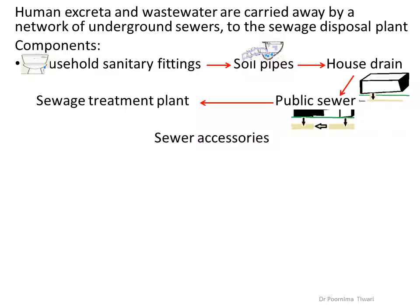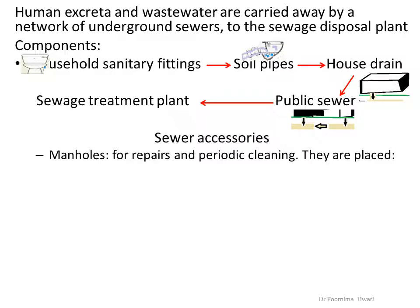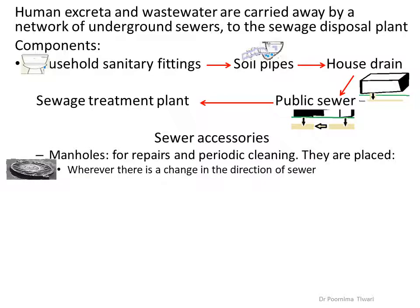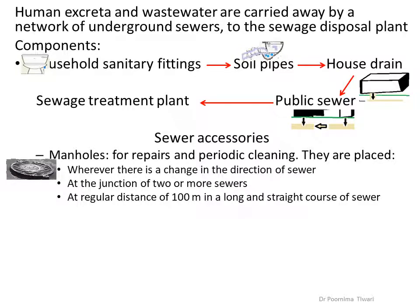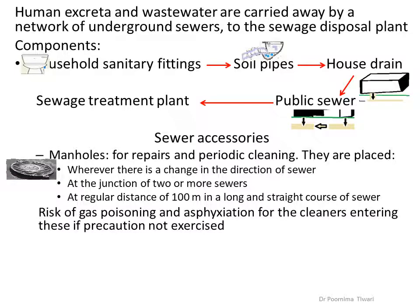Sewer accessories. The first accessory is manholes, used for repairs and periodic cleaning. Manholes are placed wherever there is a change in direction of the sewer, at the junction of two or more sewers, or at regular intervals of 100 meters if the sewer has a straight run. There is a risk of gas poisoning and death by asphyxiation for cleaners if they enter the sewer for cleaning purposes without taking due precaution.